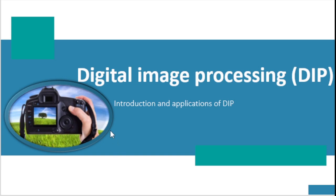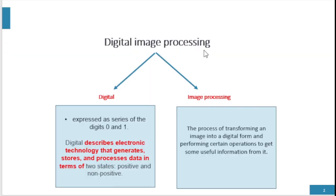In this lecture we discuss what is digital image processing, how it works, advantages and limitations, and some applications. Digital image processing divides into two parts: first is 'digital' and second is 'image processing.' Digital refers to data expressed in a series of zeros and ones; it describes electronic devices that store and process data.